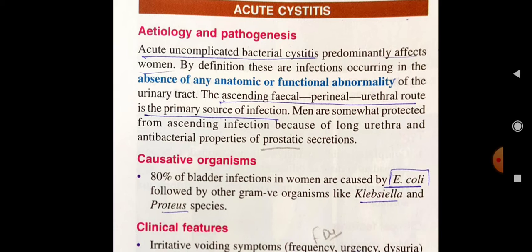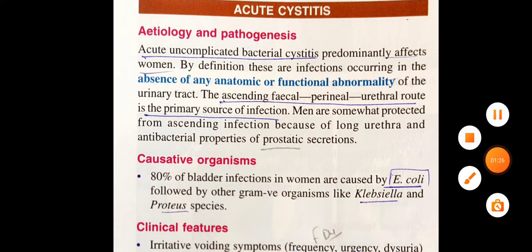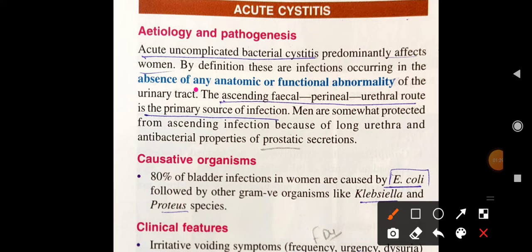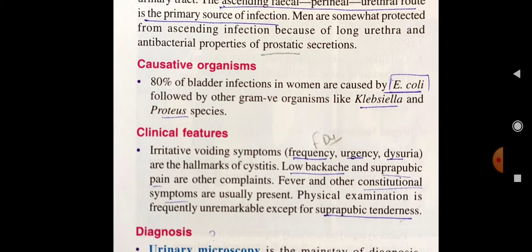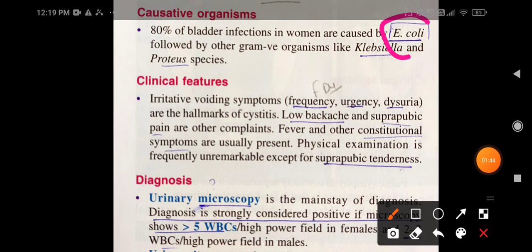This is Acute Cystitis. These are infections that occur in the absence of any anatomic or functional abnormality of the urinary tract — Acute Uncomplicated Bacterial Cystitis, predominantly affecting women. The ascending route is the primary source of infection. The causative organisms include E. coli and Klebsiella/Proteus.